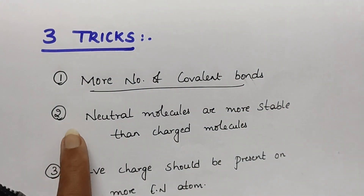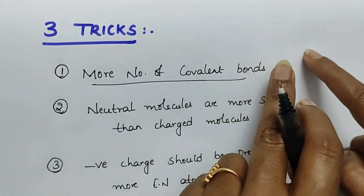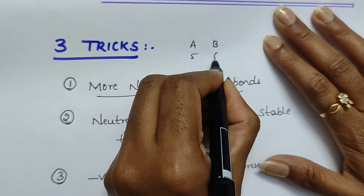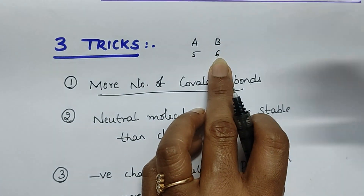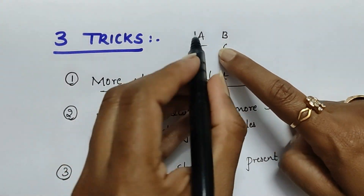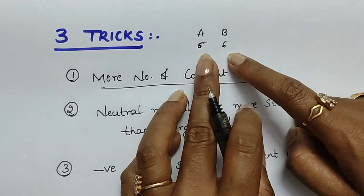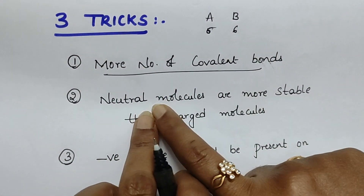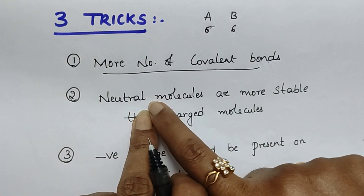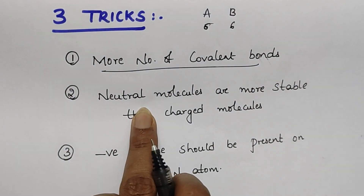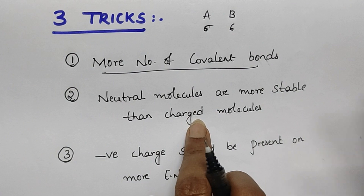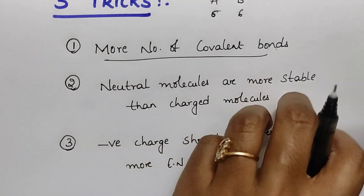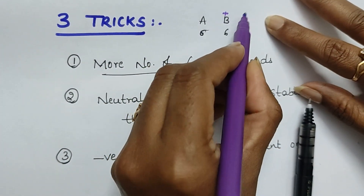Trick number two: if two structures have the same number of covalent bonds — suppose A is having five and B is having six, then six covalent bond structure is more stable. But if both A and B are having six covalent bonds, then check which is a neutral molecule. Neutral molecules are more stable than charged molecules. If a molecule has plus or minus charge, it is less stable.